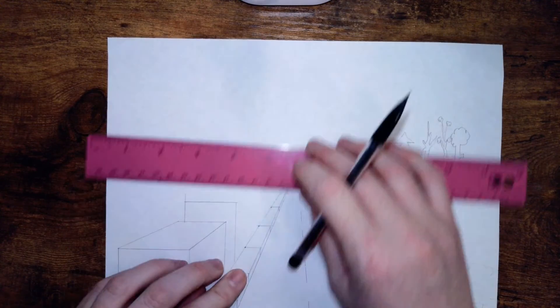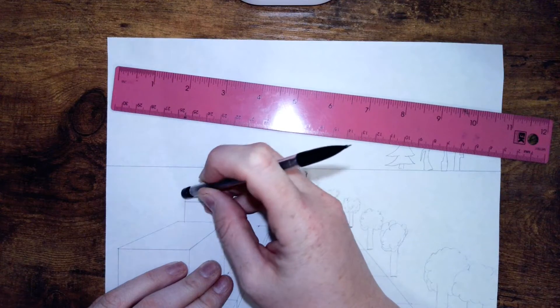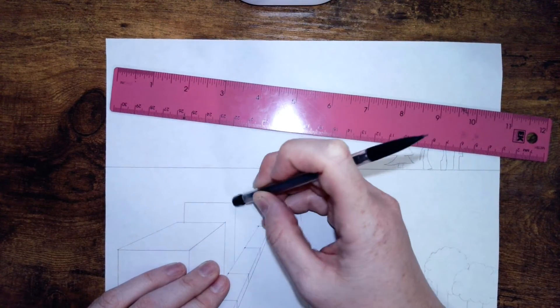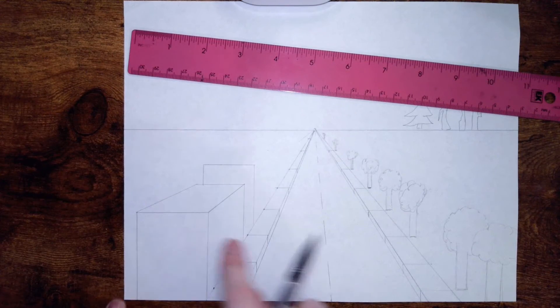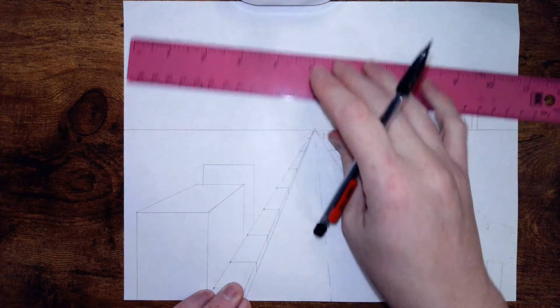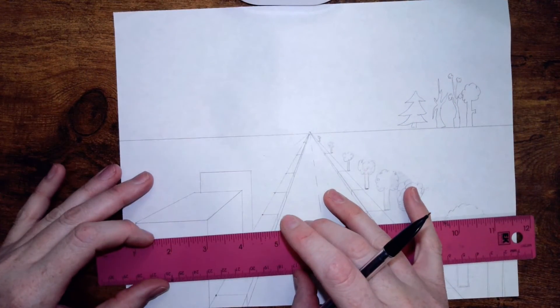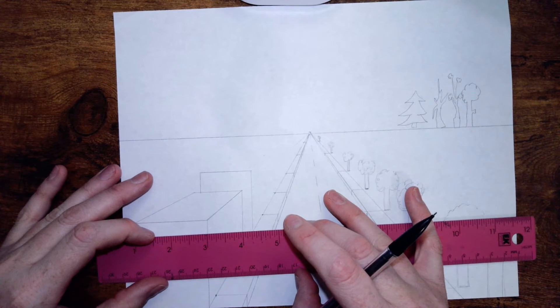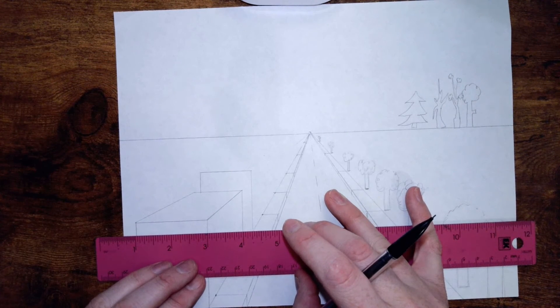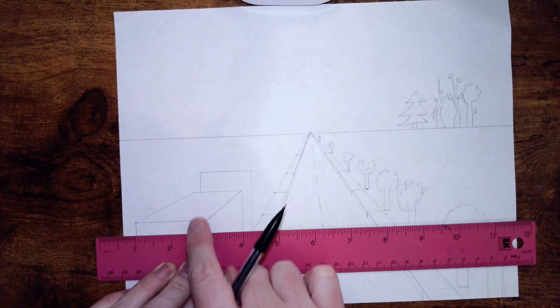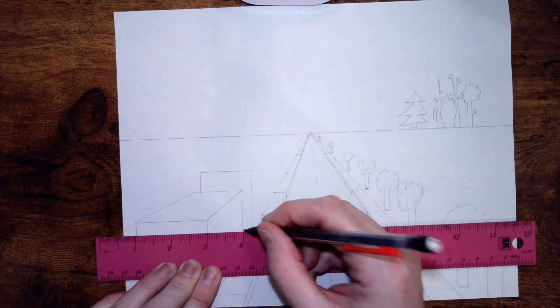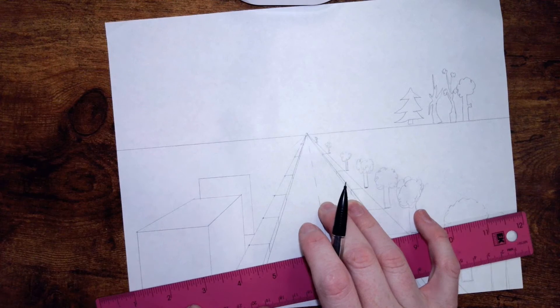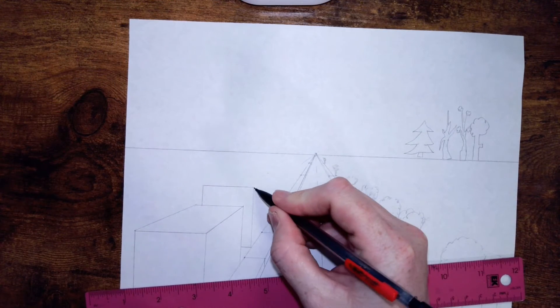So now I have a rectangle just like I did here, but I need to give myself a bottom. So I'm going to line this up, making sure it's parallel to here and parallel to the sidewalk. They should all be parallel lines, and draw a line right there. Now I need to match up these two corners back to my vanishing point.